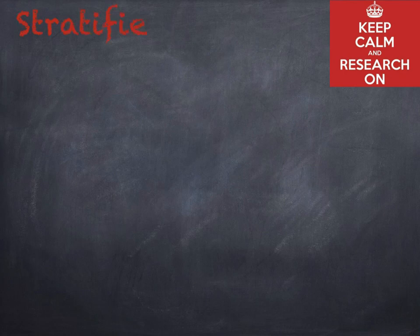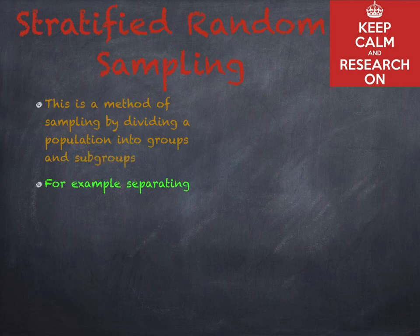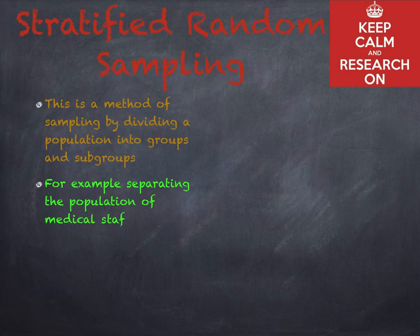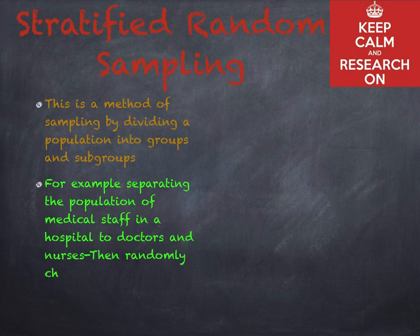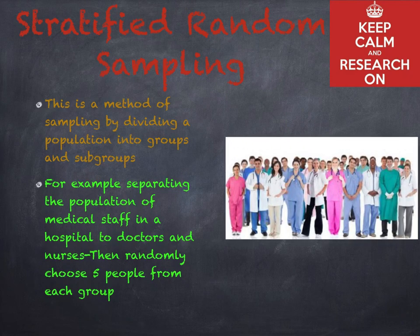Stratified random sampling is a method of sampling by dividing a population into groups and subgroups. For example, separating the population of medical staff in a hospital into doctors and nurses, then randomly choosing five people from each group.